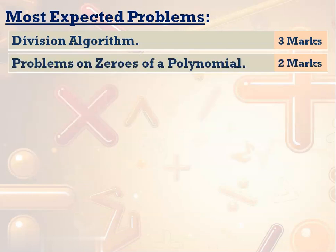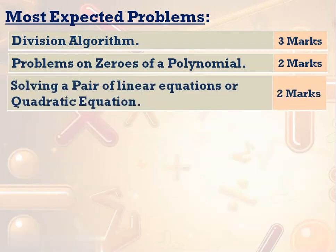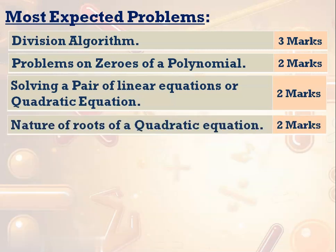Problems on zeros of a polynomial — you may get minimum 2 marks, sometimes 3 marks. They may give a quadratic polynomial and ask you to find the sum of zeros and product of zeros, then verify by finding the zeros using the actual method and verifying the relation. Or they may give the sum and product and ask you to find the quadratic polynomial. Also, solving a pair of linear equations and quadratic equations — sometimes there is a chance of getting questions from both for 2 marks each, totaling 4 marks. And the nature of roots — the discriminant B²−4AC — may give 2 marks.